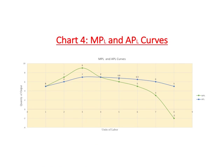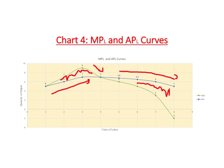This final chart brings in both MPL and APL curves — the green curve is the MPL curve and the blue one is the APL curve. In the zone where marginal is greater than average, average is increasing. Then marginal becomes less than average, so average starts going down. With this sequence, the marginal curve intersects the average curve from above, and 7 happens to be the maximum average product of labor. This is how we use the marginal-average relationship on the MPL and APL curves. Thank you for your time.